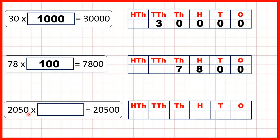Now, 2050 times what equals 20,500? Here our missing number is 10 because if we look at our answer, we have the number in our question but with an extra zero on the end.